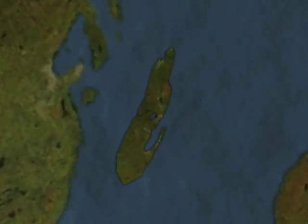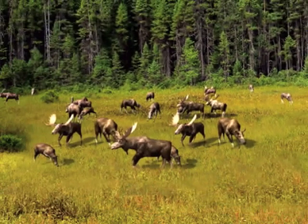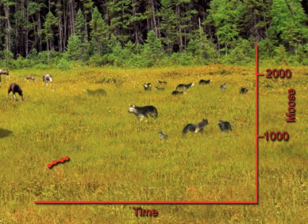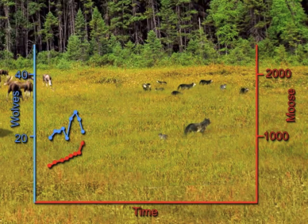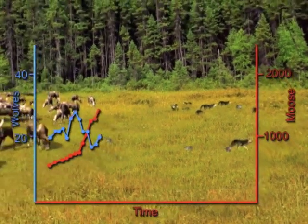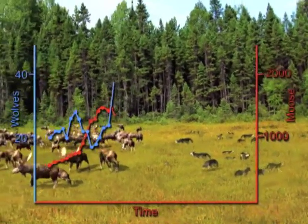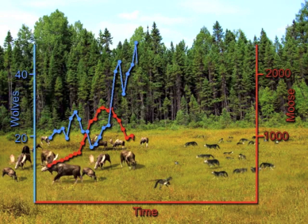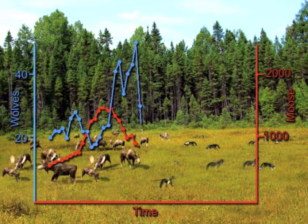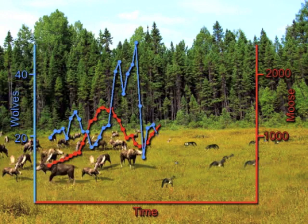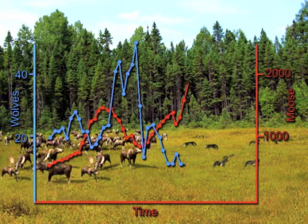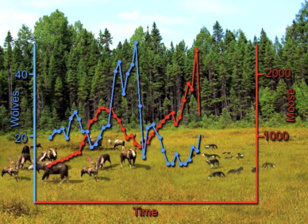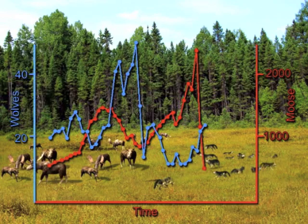In Lake Superior, Isle Royale is home to moose, whose population size is shown in red, and wolves, whose population size is shown in blue. As wolves preyed on moose, the moose population crashed, and wolf numbers increased. But with fewer prey, the wolf population also crashed, which allowed the moose population to rebound. This pattern of interrelated ups and downs is sometimes seen in predator-prey situations.